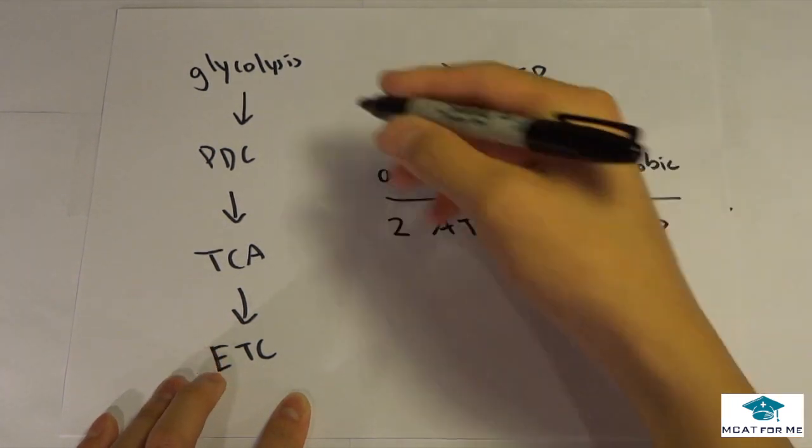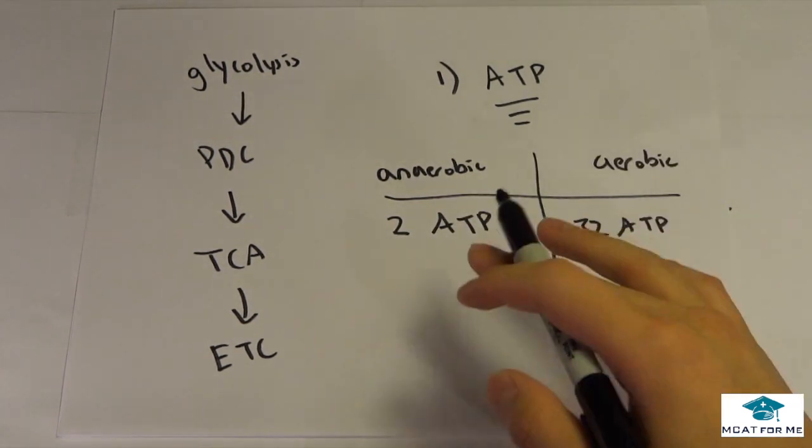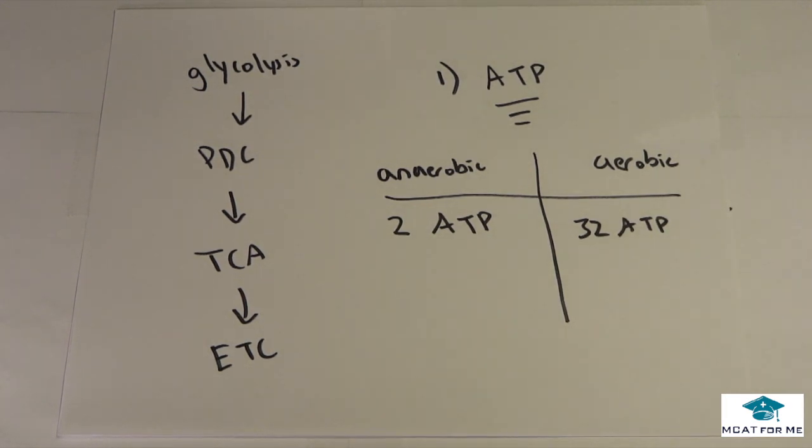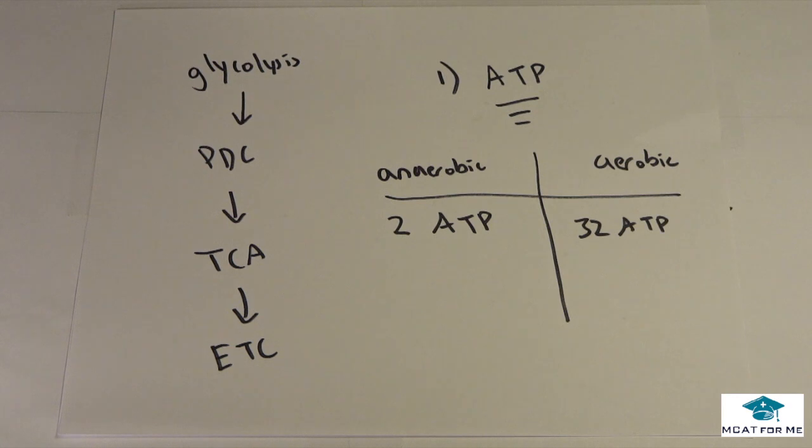But in aerobic, if we go all the way through all the steps, if we calculate it, we get 32 ATP. So this is a number that we should just memorize. 2 ATP in anaerobic, 32 in aerobic. So if they were to ask us something like, would the activity of the enzymes in glycolysis be much higher in anaerobic or aerobic to get the same number of ATP, to get the same number of energy? The answer would be in anaerobic condition, you would have a much higher activity of these enzymes because it has to work 16 times as hard to get the same amount of ATP. So we know that the enzymes in the anaerobic condition are working a lot harder. So that's one take home message.